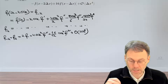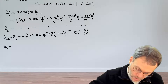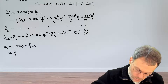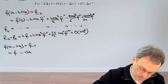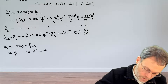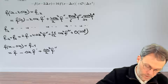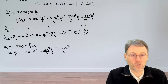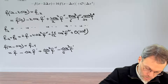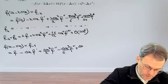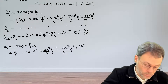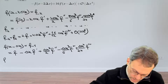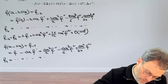Let's proceed along exactly the same lines. Write down f of x minus Δx, also known as f minus 1. By Taylor expansion: f minus Δx times f prime, then plus Δx squared divided by 2 times f double prime, then minus Δx cubed divided by 3 factorial — that's 6 — times the third derivative, and then Δx to the power of 4 divided by 4 factorial — that's 24 — times the fourth derivative, plus more terms. For f1, it's exactly the same but with plus signs everywhere.